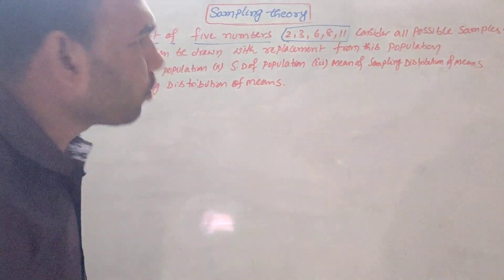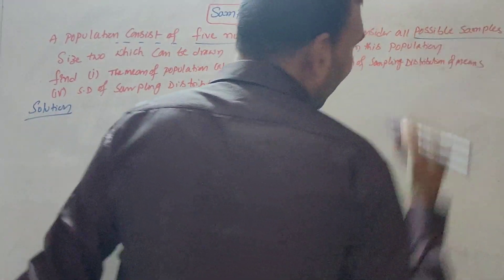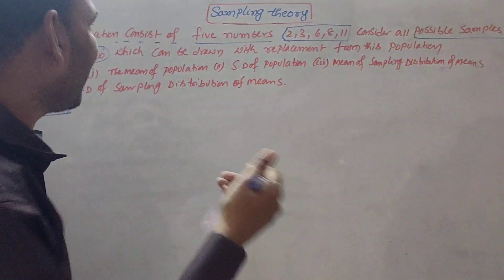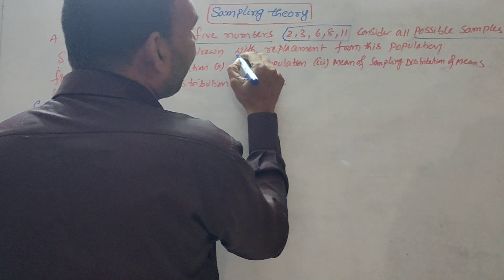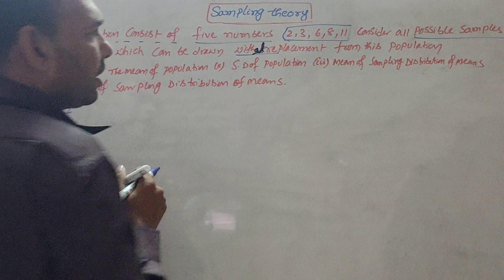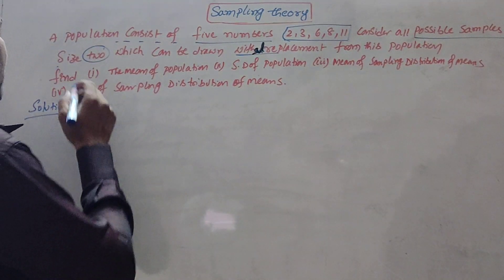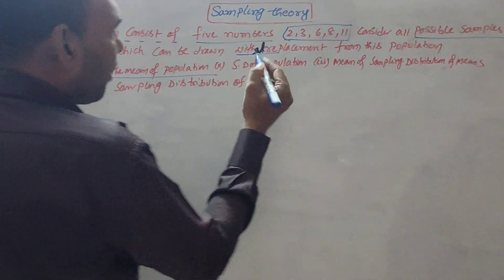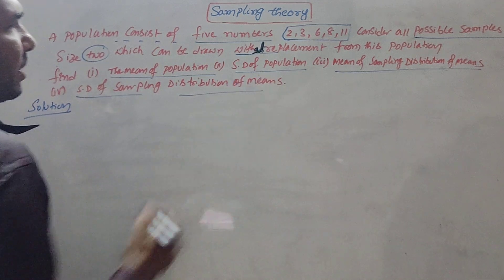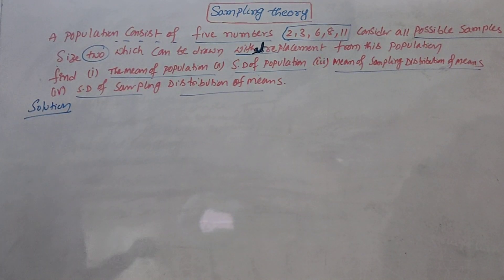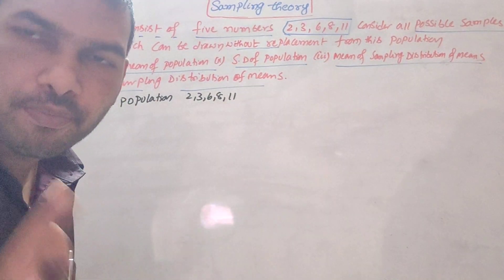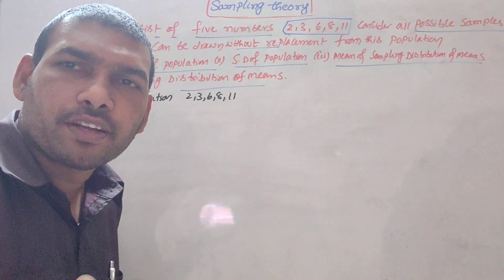We need to draw samples of size two — that is, 20 samples — without replacement from the population. We need to find: the mean of the population, the SD of the population, the mean of the sampling distribution of means, and the SD of the sampling distribution of means. To find these, first write the given population, then find the mean of the population: mean equals sum of items by number of items.